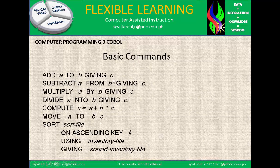Basic commands: ADD A TO B GIVING C. SUBTRACT A FROM B GIVING C. MULTIPLY A BY B GIVING C. DIVIDE A INTO B GIVING C. An example of operations: COMPUTE X = A + B * C. MOVE A TO B. SORT FILE ON ASCENDING KEY USING INVENTORY-FILE GIVING SORTED-INVENTORY-FILE. Note that if you run these as shown, it will produce an error because variables A, B, and C have not been given values — so this is essentially pseudo code.